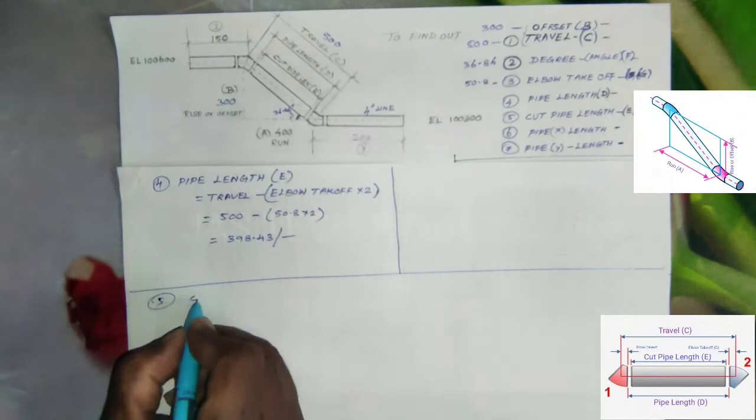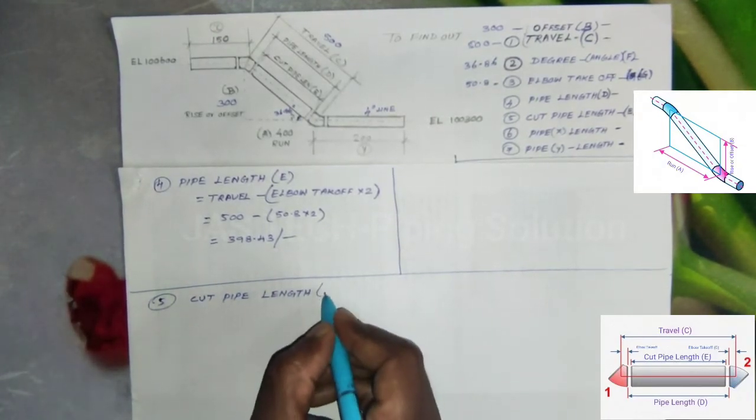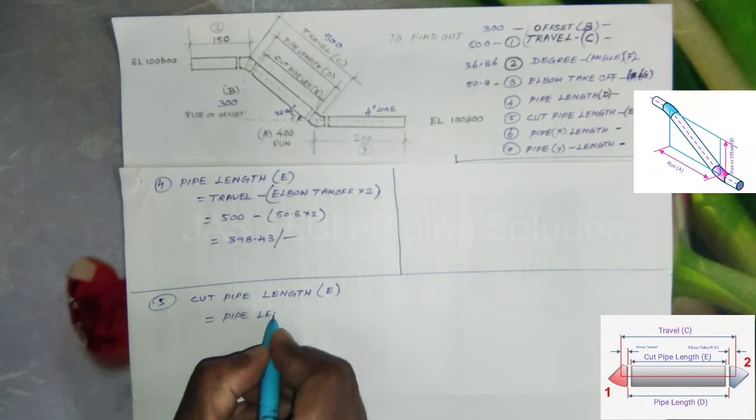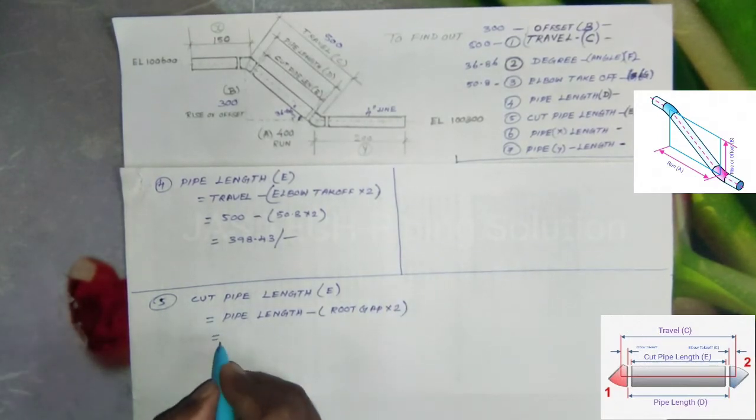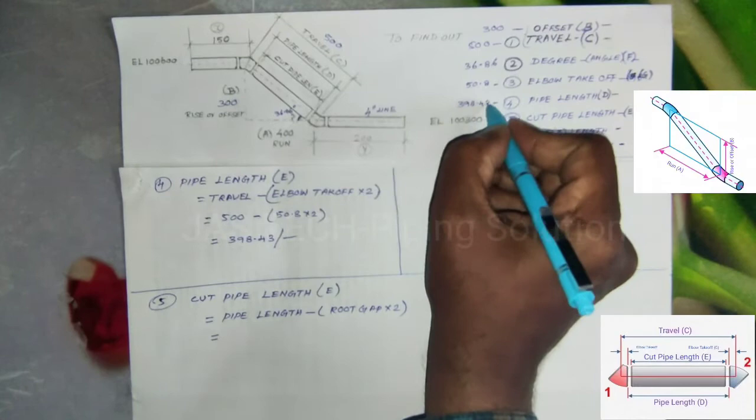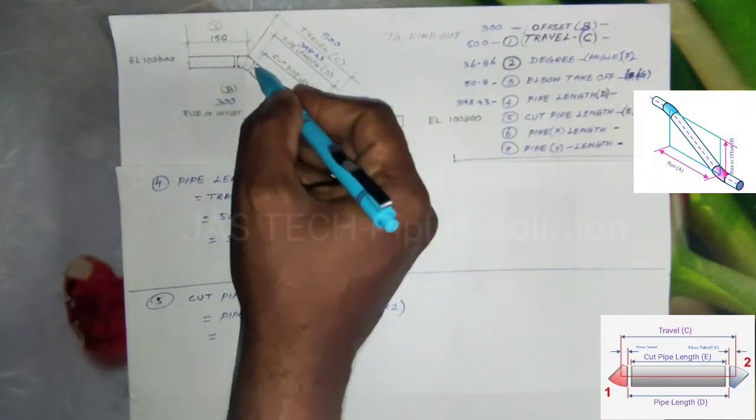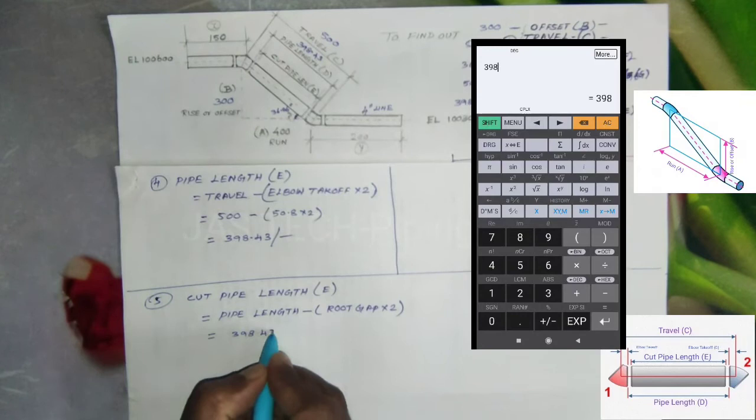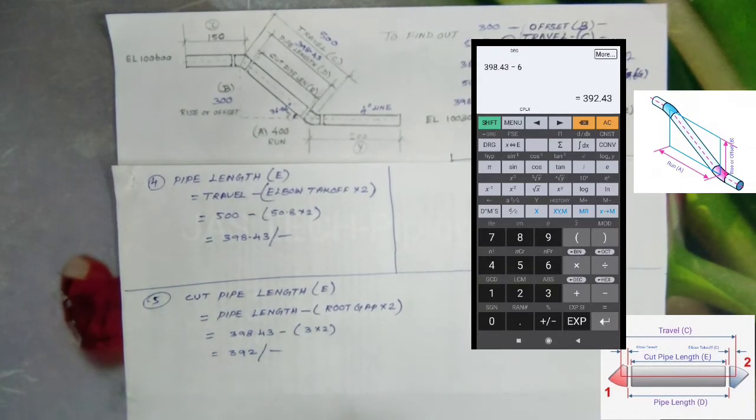Next, fifth one, cut pipe length. Cut pipe length equals pipe length minus root gap times 2. Pipe length we know is 398.43. We need to minus 2 root gaps, so 398.43 minus 3 millimeter root gap times 2. The result is 392.